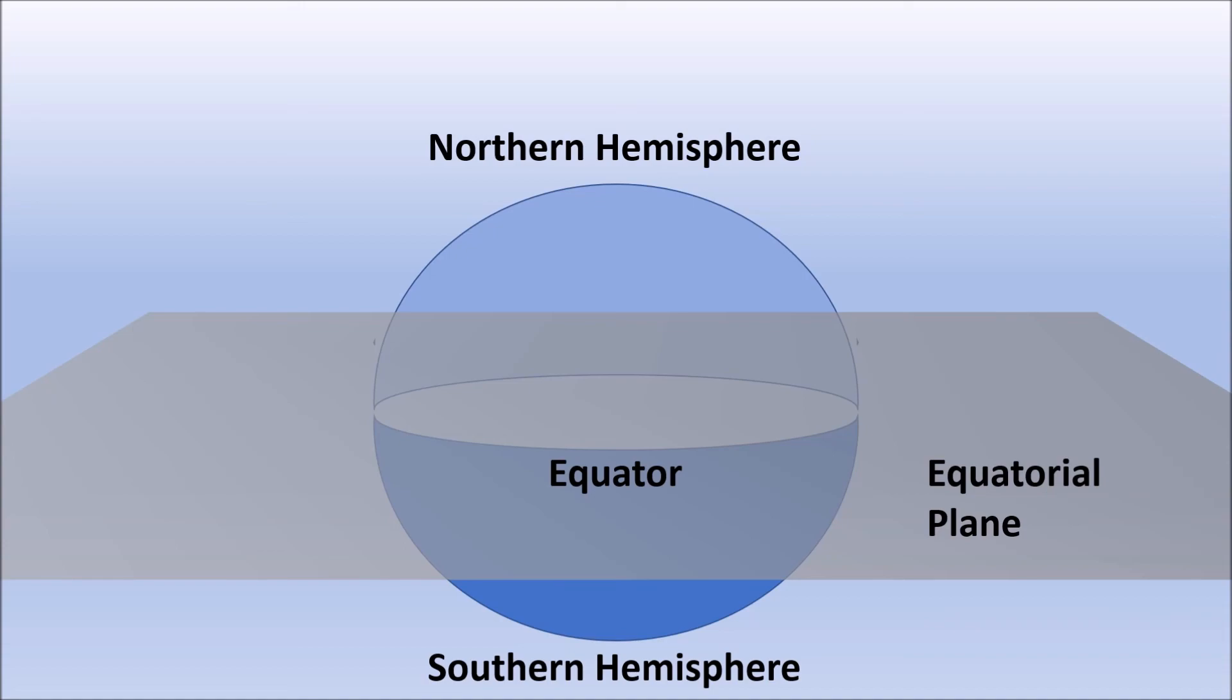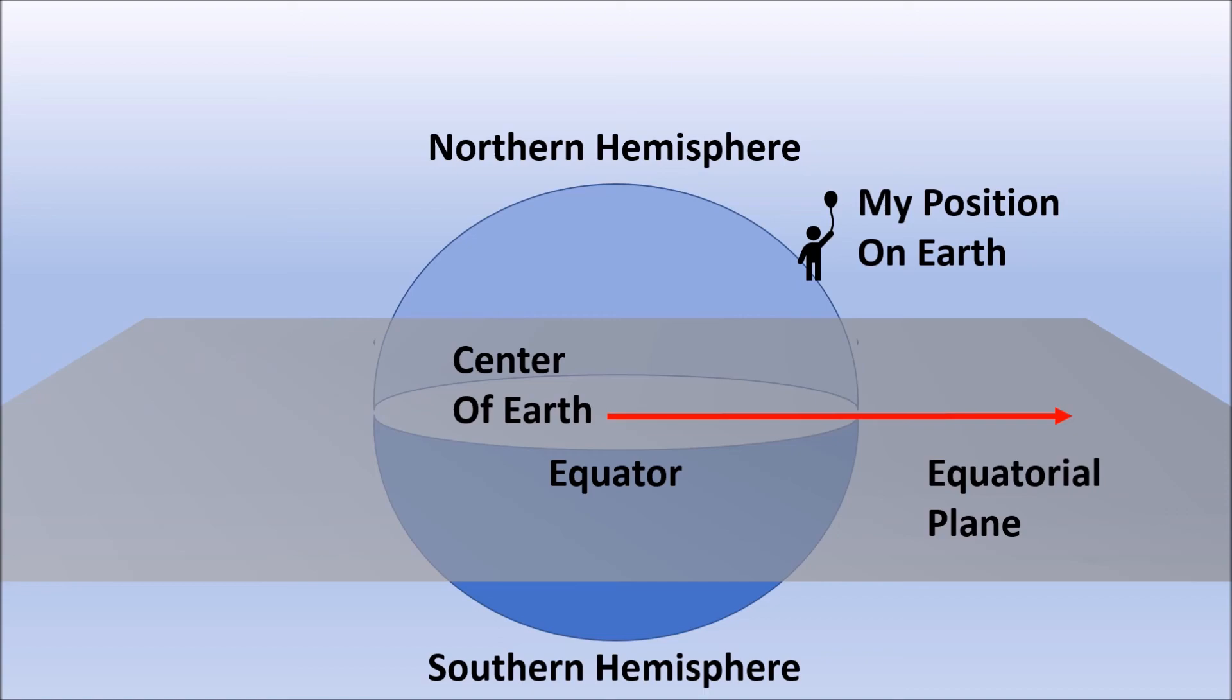Now draw this line from the center of the earth along the equatorial plane and me standing on the surface of the earth. Now draw another line from the center of the earth to me. So you see, two lines or two rays joining at the center of the earth. And the space between them is an angle. And this angle is latitude.